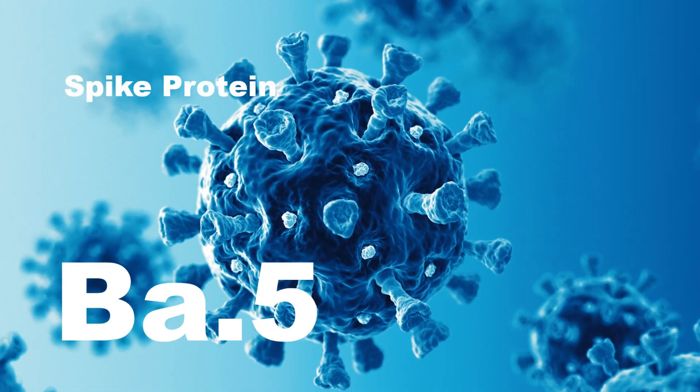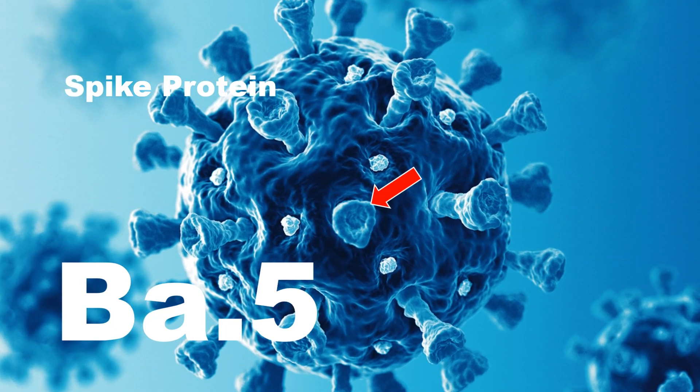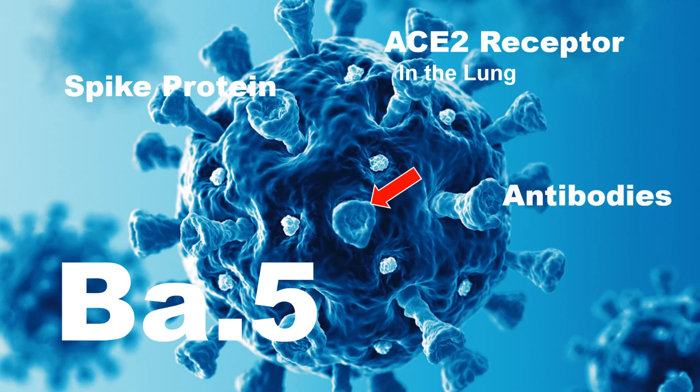How does Omicron spread? The coronavirus has spike proteins on the surface of the virus. The Omicron variant has mutations that change the spike protein, allowing the BA5 sub-variant to evade the body's immune system, making vaccines less effective. The club-shaped spike protein attaches to ACE2 receptors on lung cells, allowing the virus to enter the cell and begin replication.